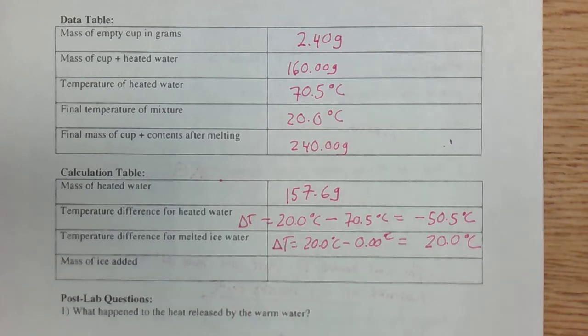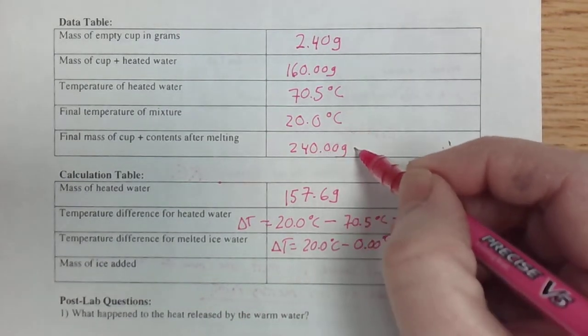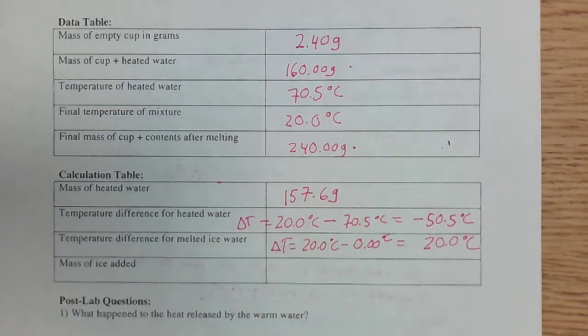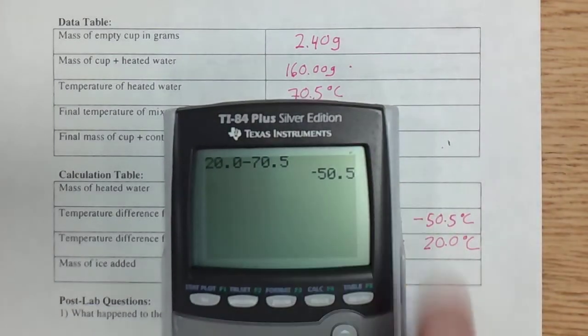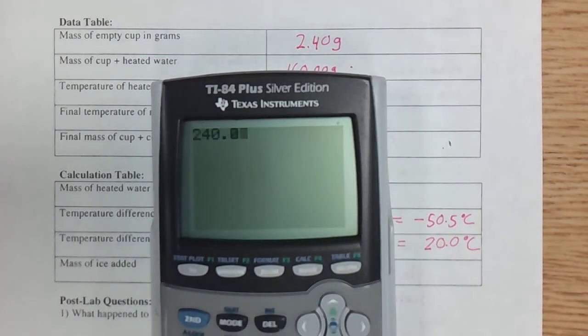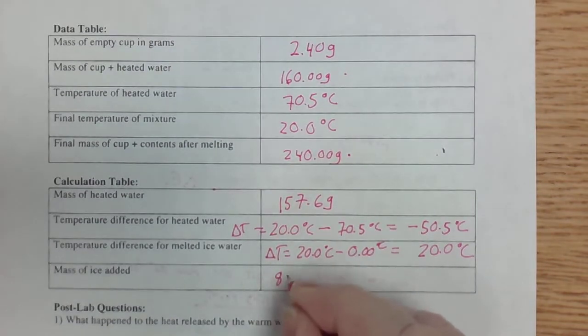Now finally, to find the mass of the ice that's been added, we take the total mass after and subtract the mass of the cup and the heated water. So back to our calculator here. In this case, we have 240.00 minus 160.00 and a nice round 80 grams. So that will be 80.00 grams.